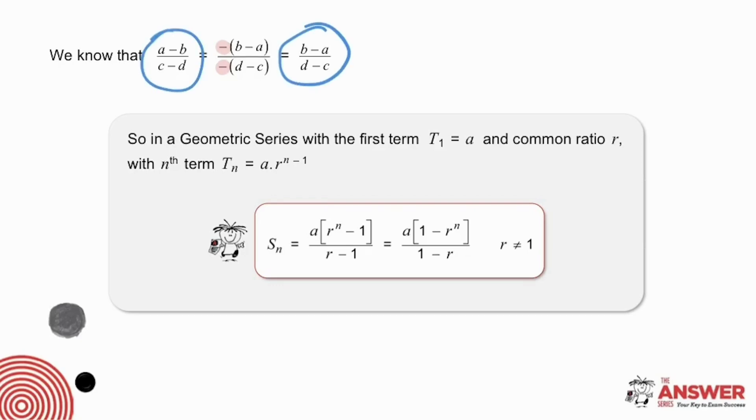The significance of mentioning that is if we have a geometric series with first term a and common ratio r, the sum of the first n terms is a times r to the n minus 1 over r minus 1. But an equivalent formula for that is a times 1 minus r to the n over 1 minus r.